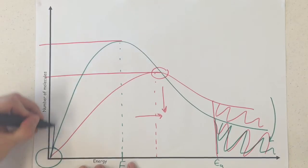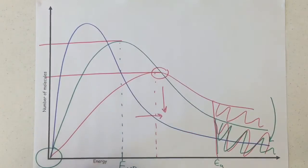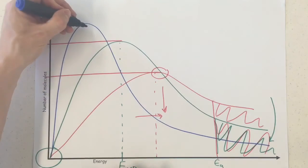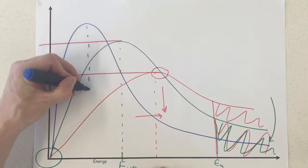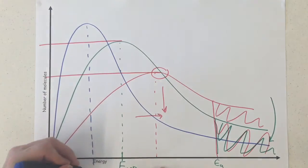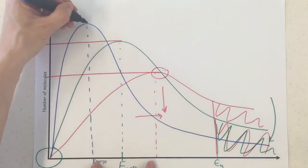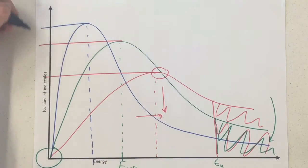And we see that because this is our curve for the lower temperatures, this is our lowest temperature curve. Once again, we can see that our most probable energy is now at a lower energy value, but look at that. Now we've got many more molecules actually possess it.